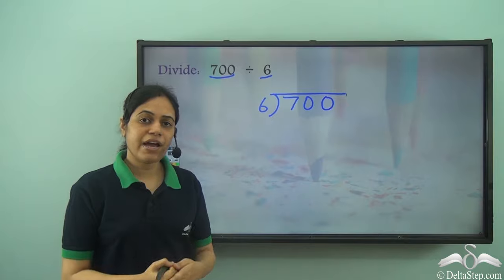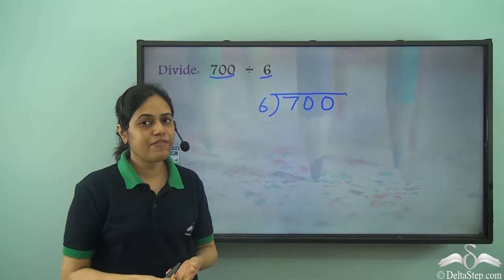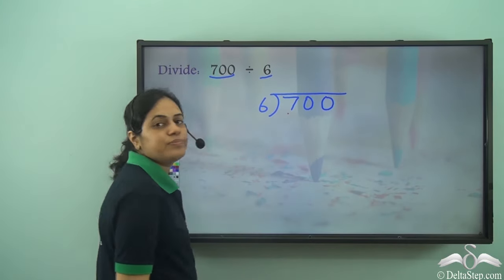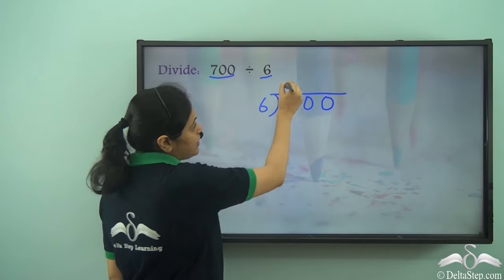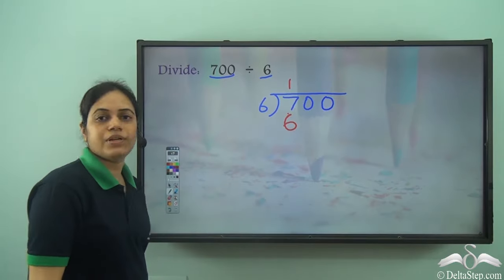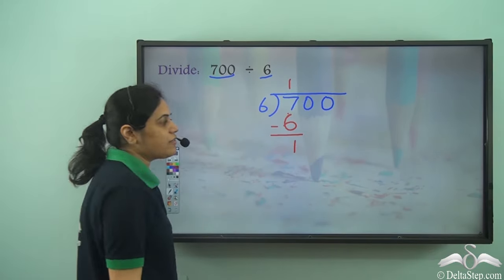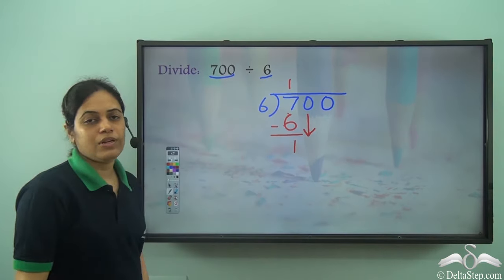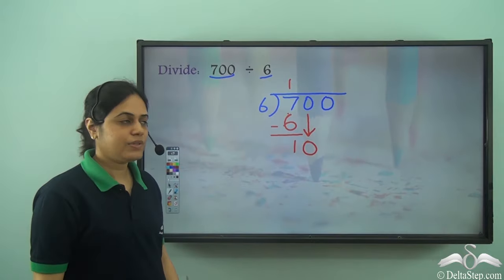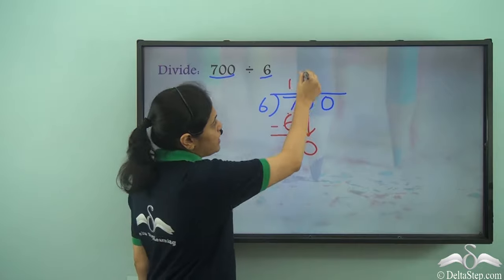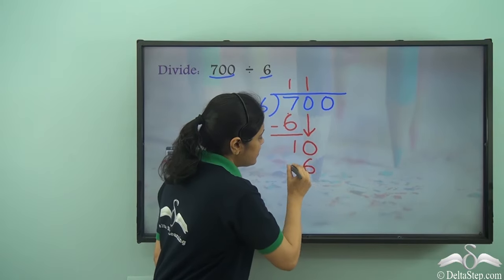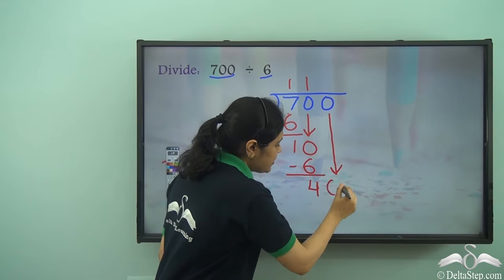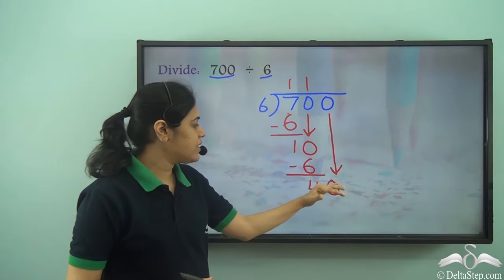I can divide a 3-digit number by a 1-digit number in the same way I divide a 2-digit number. Let us start by taking 7, which is the first digit. 6 goes into 7 one time. 1 into 6 is 6 and I subtract to get 1. Now 1 is less than 6, so I bring this 0 down to make it 10. How many times does 6 go into 10? One time. I subtract it to get 4. I have another 0 here.